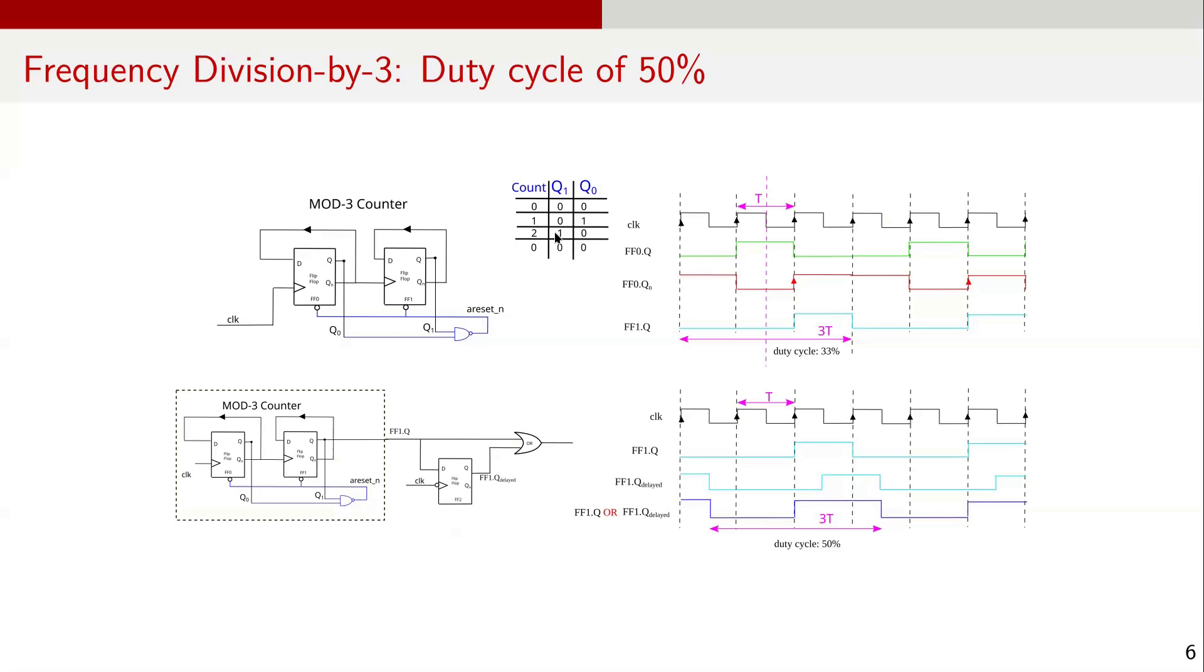Another way to understand this is by looking at the truth table. FF1Q is 1 for 1 clock cycle and 0 for 2 clock cycles. By delaying it by half a clock cycle, that is by sampling on the falling clock edge and then ORing the 2 signals, we obtain the desired f over 3 output with a 50% duty cycle.